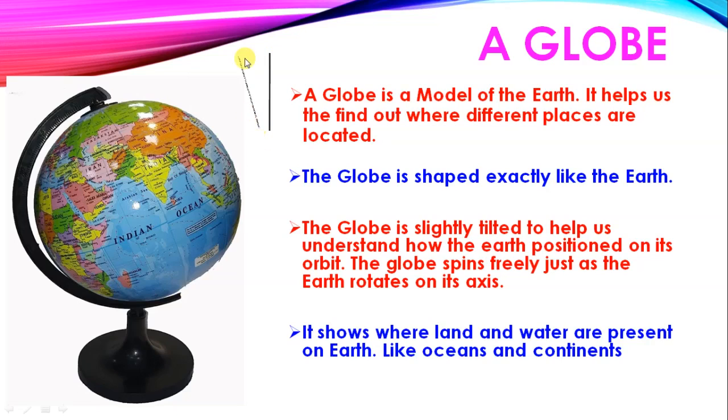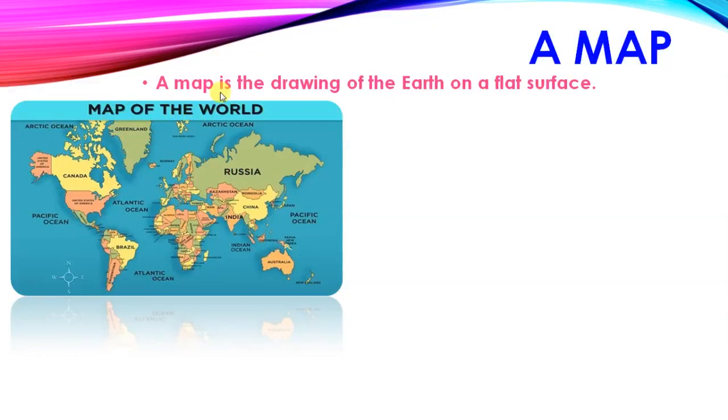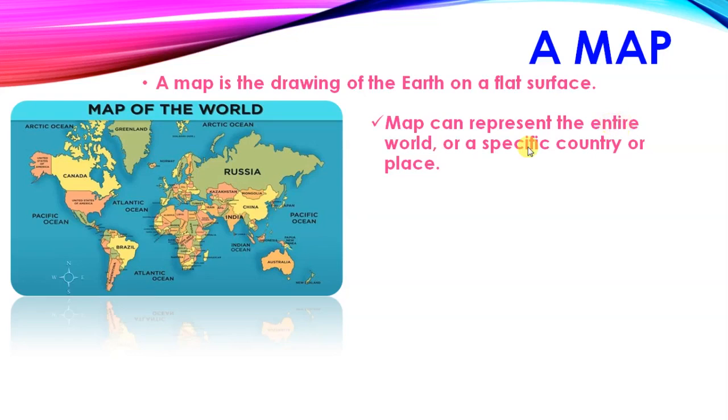This is a straight line. A map is the drawing of the earth on a flat surface. Maps can represent entire world or a specific country or a place. It represents entire world. Full world we can see on one single map. We can also see specific country's map.